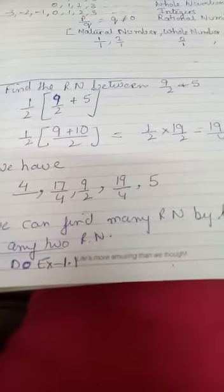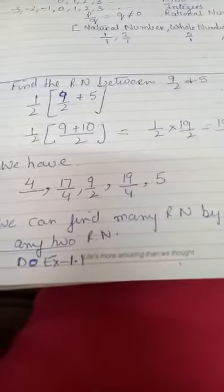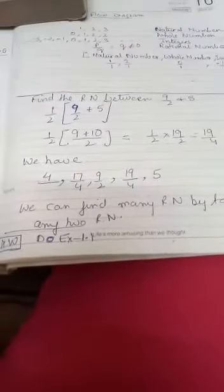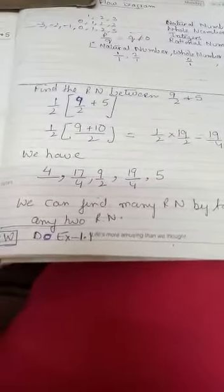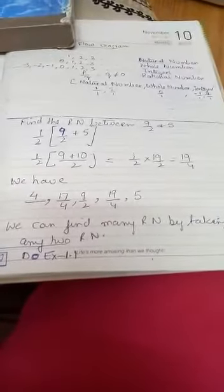So, we have 4. Between 4 and 5, we have 17 by 4, 9 by 2 and 19 by 4. So, by this method we can find as many rational numbers between the two rational numbers. Now, after this do exercise 1.1.